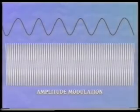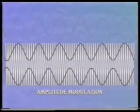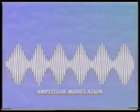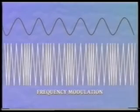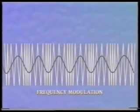In amplitude modulation, the lower frequency measuring wave is superimposed on a high frequency carrier wave to modulate its amplitude. In frequency modulation, the carrier wave has a constant amplitude, but its frequency varies in proportion to the amplitude of the measuring wave.